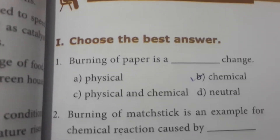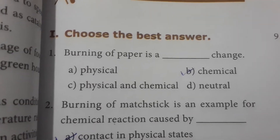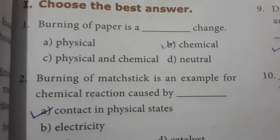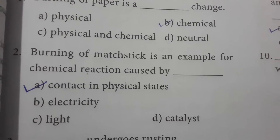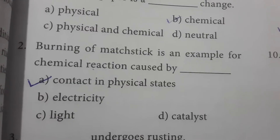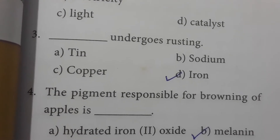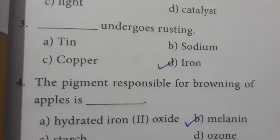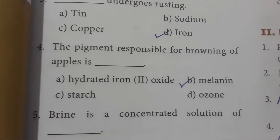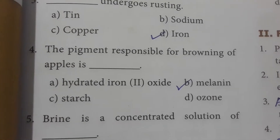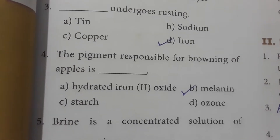In the 'Choose the Best Answer' section: Burning of paper is a chemical change, because once paper gets burnt, everything is converted into carbonated materials. Burning of a matchstick is an example of a chemical reaction caused by contact in physical states — when you scratch the matchstick, there is physical contact between the matchbox surface and the matchstick. Only iron undergoes rusting; tin, sodium, and copper do not, so option D is correct. The pigment responsible for browning of an apple is melanin — the same pigment that causes darker skin color in humans.